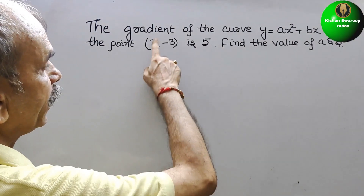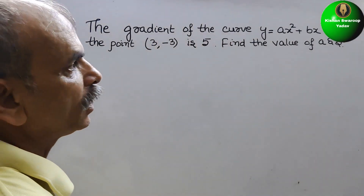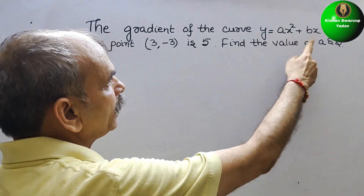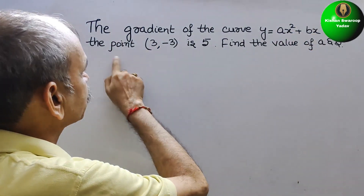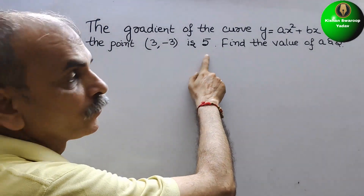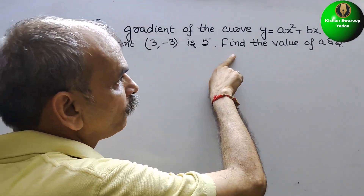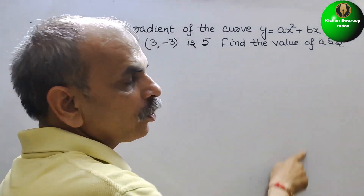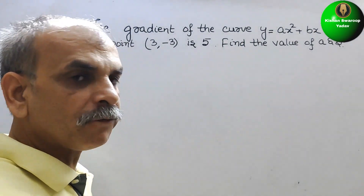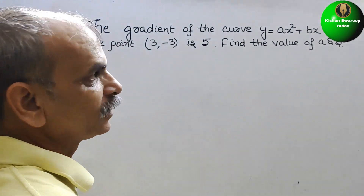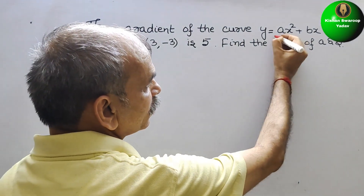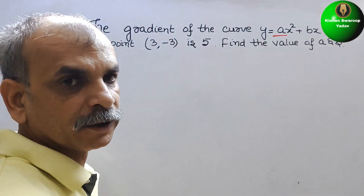The question is: the gradient of the curve y = ax² + bx at the point (3, -3) is 5. Find the values of a and b. Since they have told us the gradient, we need to differentiate this expression.